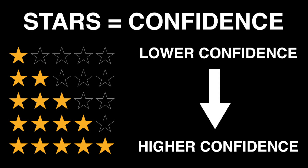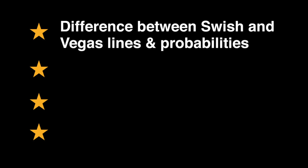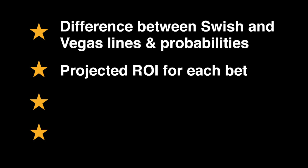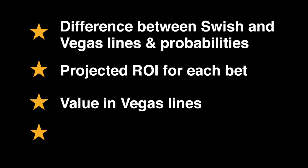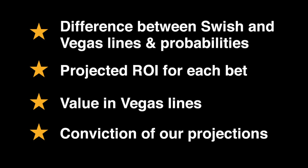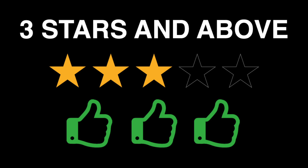The number of stars is assigned based on a variety of factors: the difference between our projections and Vegas lines and probabilities, our projected return on investment for each bet, value or opportunity for arbitrage in the Vegas lines, and overall conviction of our projections. If there are more stars — anything three stars and above — our system has identified a smart bet.